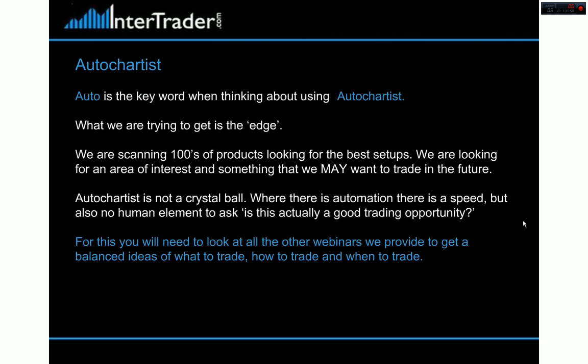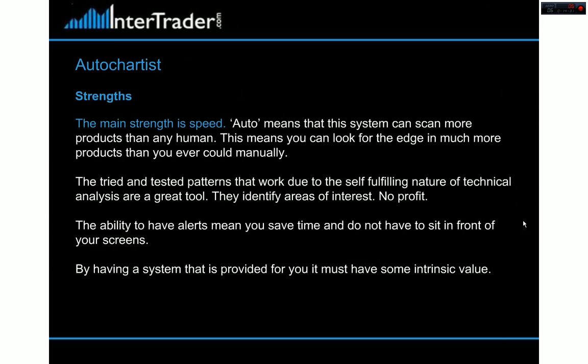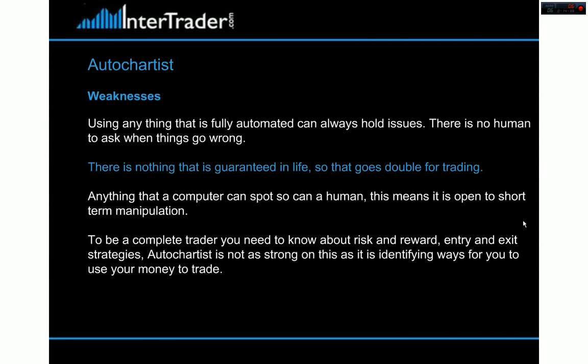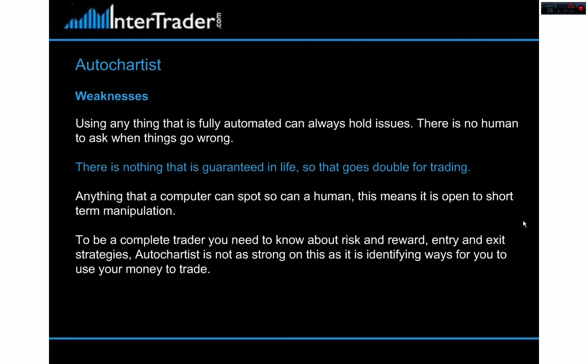Auto is the key word — use Auto Chartist to its best ability. It takes charts from multiple products and multiple timeframes, giving it to us in a way that we can pick and choose what we want. It can scan more information than we possibly can — that's the whole point. A computer can scan much more information, but it doesn't mean a computer is smarter. It gives us more information but can't make any calls for us — we're still the trader. The strengths are speed: the speed of assimilating lots of information across multiple tools and timeframes. The downside is it doesn't give you any strategic information — it just tells you what could work.